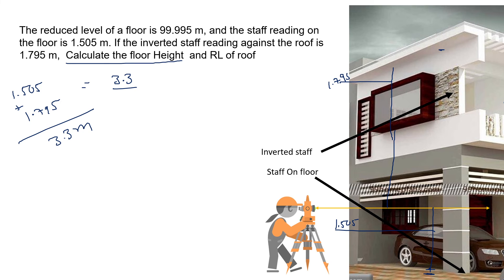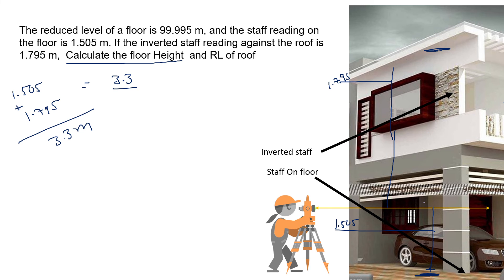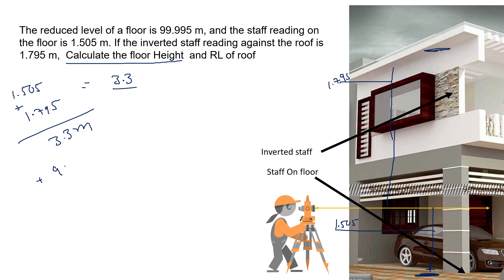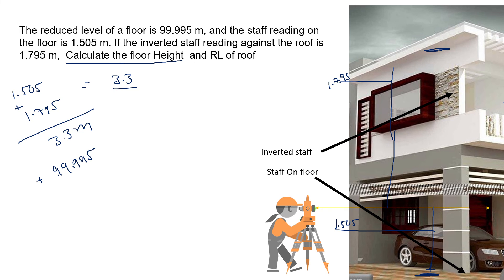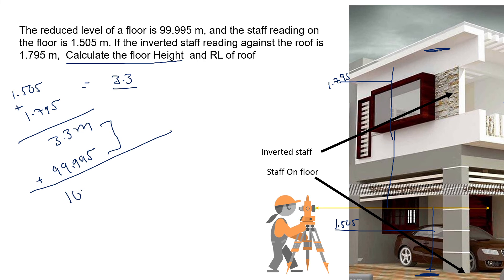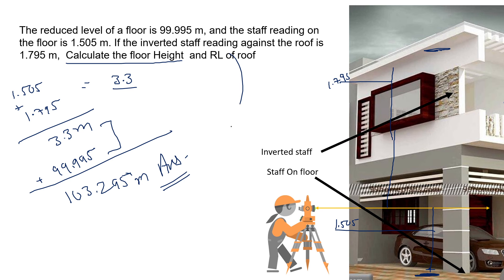Now, the elevation of the floor is given as 99.995. When we add the height of the floor to the roof — which is 3.3 meters — we get the elevation of the roof: 99.995 plus 3.3 equals 103.295. This is our answer — the RL of the roof.